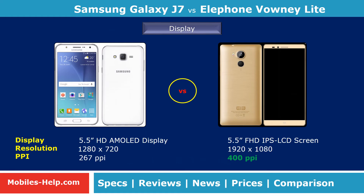Galaxy J7 has an HD AMOLED display whereas Bounty Lite has a Full HD display. Galaxy J7 has 267 ppi, which is lower than Bounty Lite which is 400 ppi. Both mobiles do not support Corning Gorilla Glass screen protection.